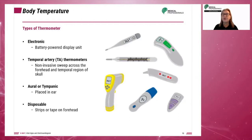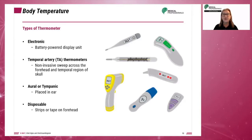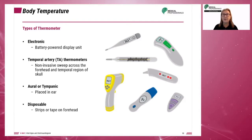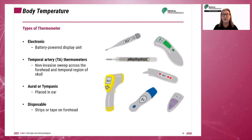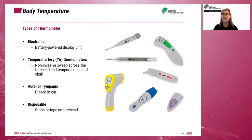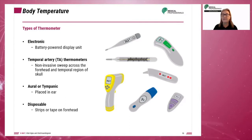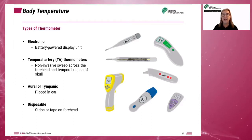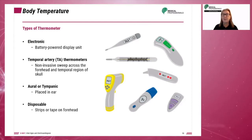The type of thermometer used will depend on where the measurement is being taken. The electronic thermometer is the most versatile and has a battery-powered display unit. Temporal artery or TA thermometers provide accurate temperature with a non-invasive sweep across the forehead and temporal region. Oral or tympanic thermometers are placed in the ear. Disposable thermometers are strips or tapes placed on the forehead.